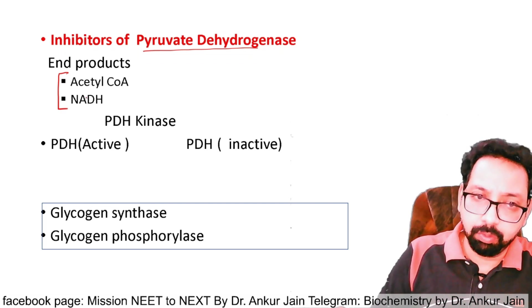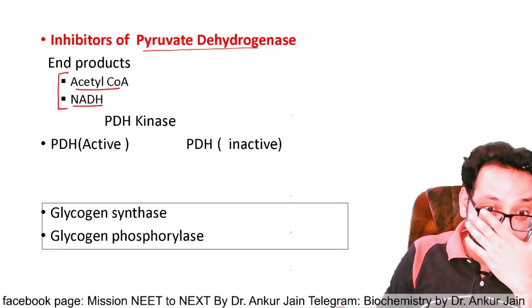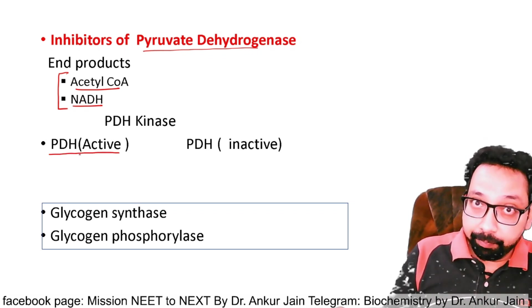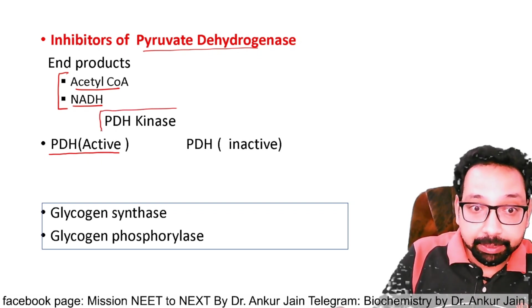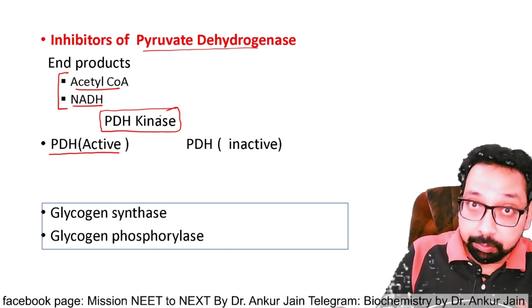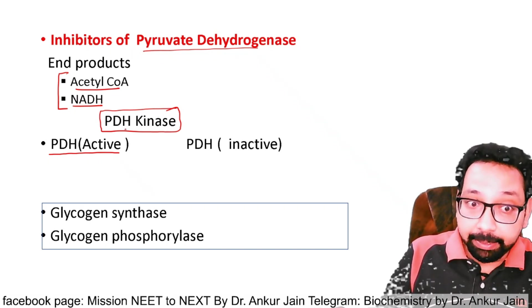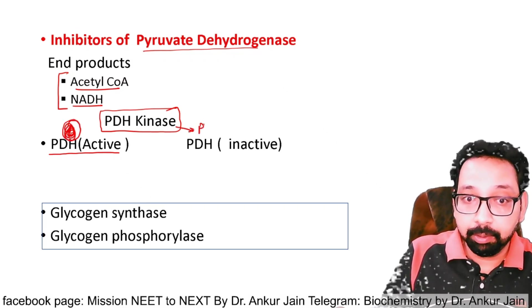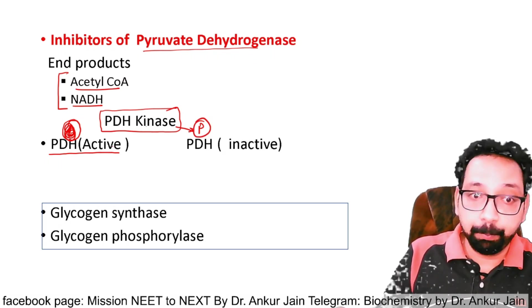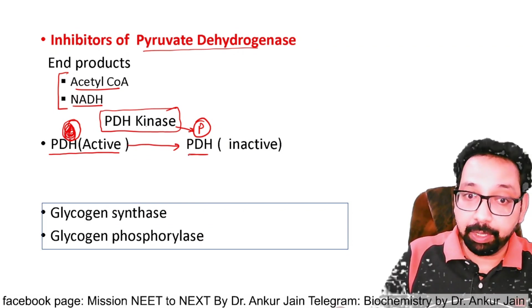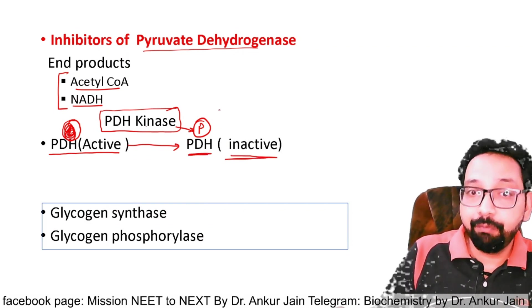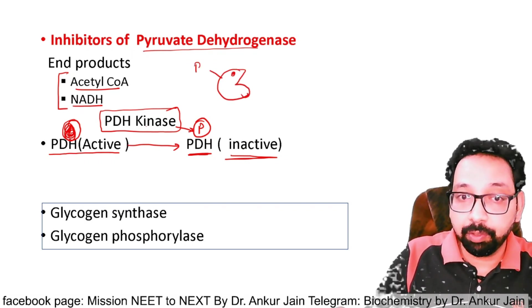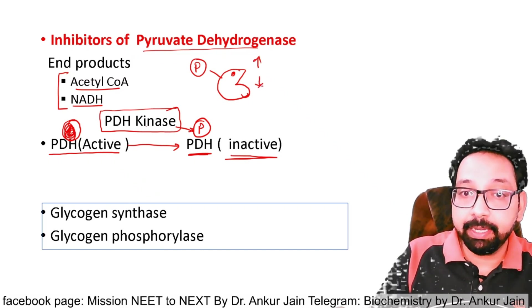Inhibitors of pyruvate dehydrogenase: the enzyme can be inhibited by its end products — acetyl coenzyme A and NADH. Another important concept: pyruvate dehydrogenase is active in its unphosphorylated form. If pyruvate dehydrogenase kinase transfers a phosphate group to pyruvate dehydrogenase, it becomes phosphorylated and inactive. Kinase is a transferase that transfers phosphate groups.